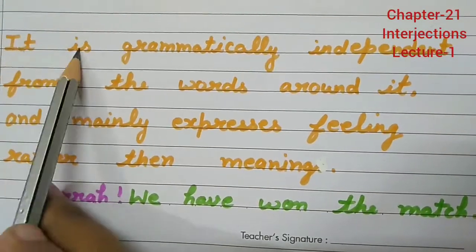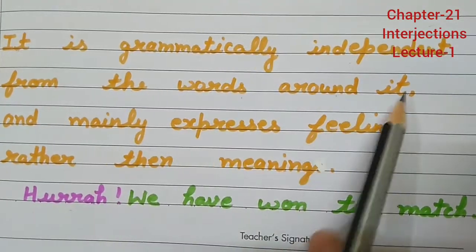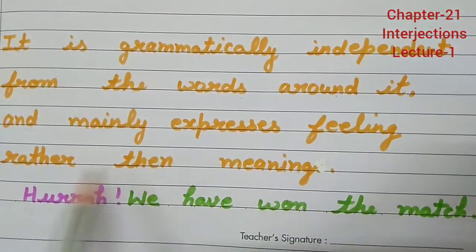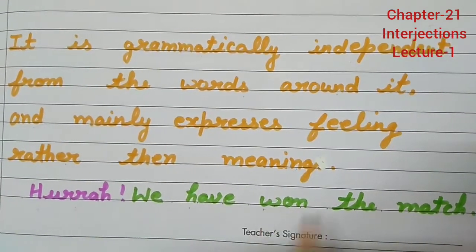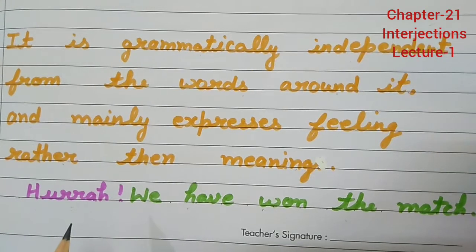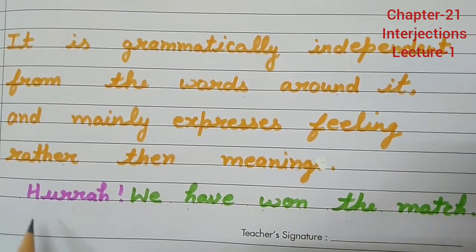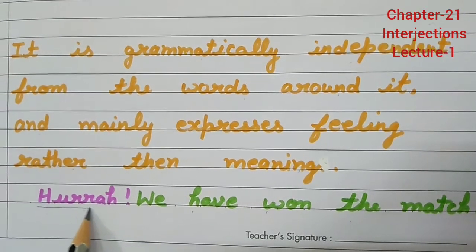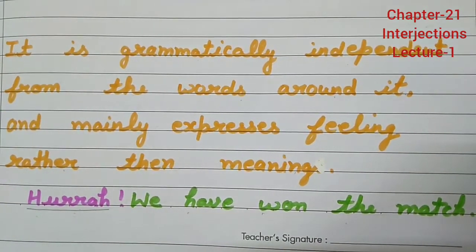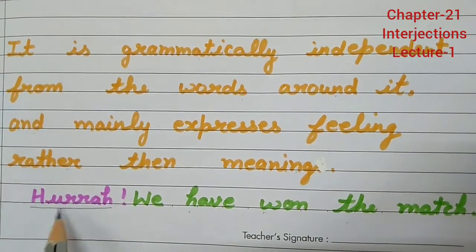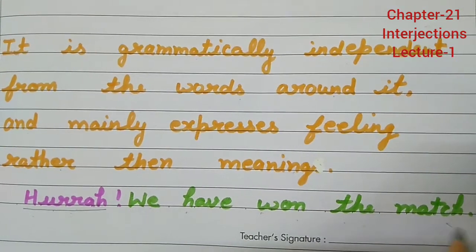An interjection is grammatically independent from the words around it and mainly expresses feeling rather than meaning. For example: 'Hurrah! We have won the match.' The word 'hurrah' can be removed and the sentence 'We have won the match' still remains complete.